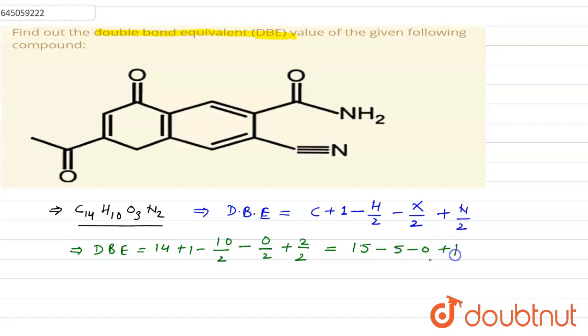So it will be 15 minus 5 minus 0 plus 1, so it will be equal to 11. So the DBE for this compound is 11. Thank you so much.